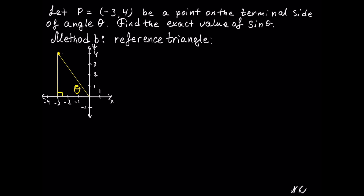Let's label the sides. The side on the x-axis is the x value, which is negative 3. The side opposite to angle theta represents the y value, which is positive 4. Sine of theta is the ratio of the opposite side divided by the hypotenuse. The opposite side to angle theta is 4, and we just need to find the hypotenuse to find our ratio.